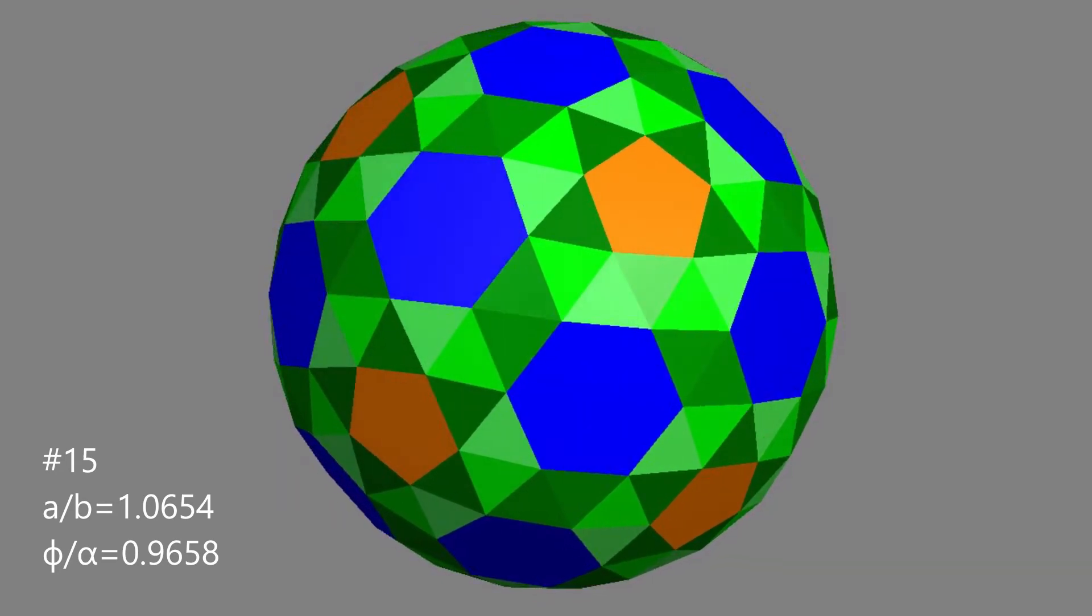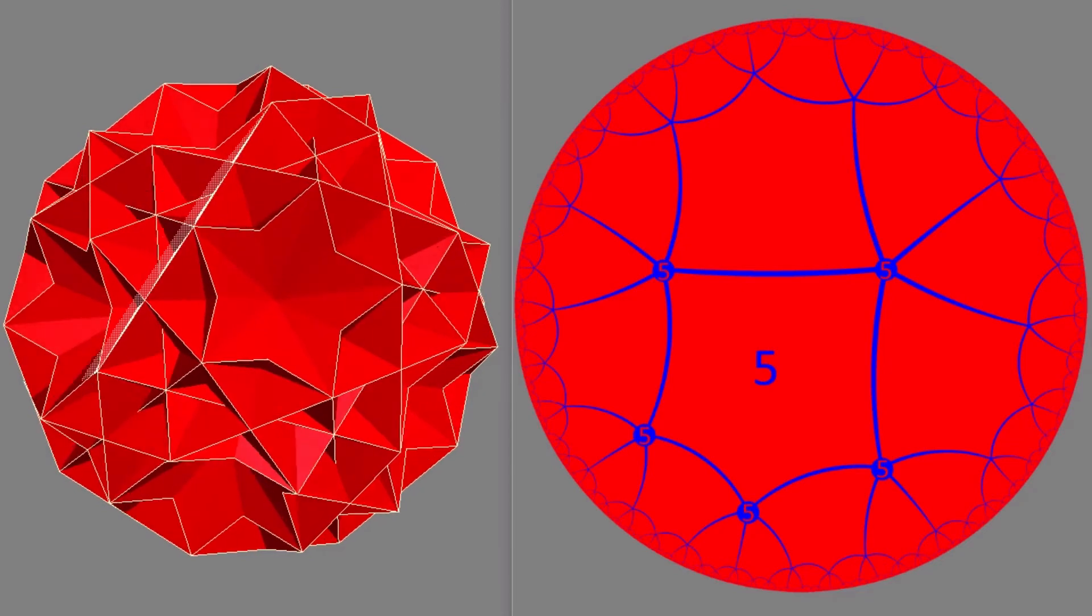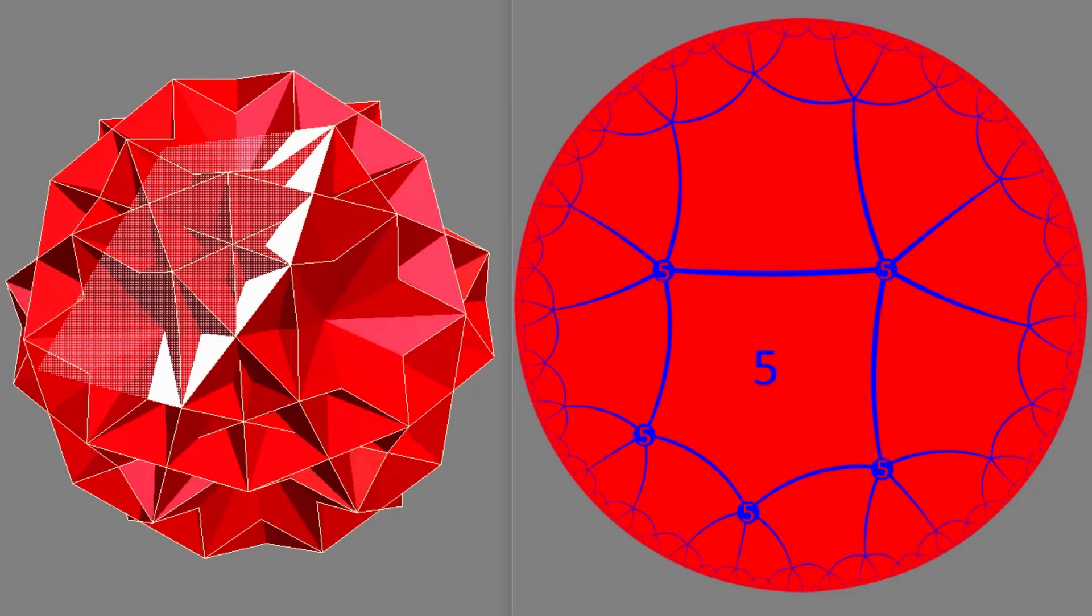In the previous video, I made a couple of mistakes. First of all, I pronounced Ian Musgali the wrong way, I'm sorry. Also I said the polyhedra are topologically equivalent to hyperbolic tilings. This is not the case.